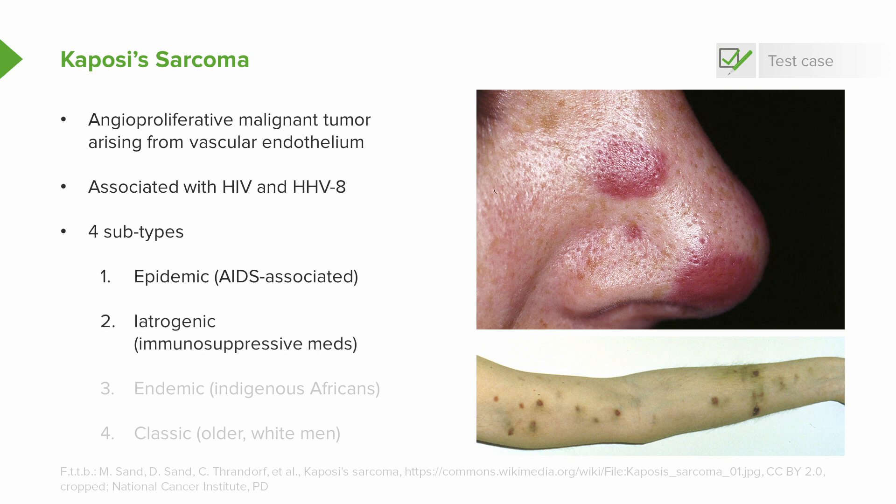But there are some other causes as well. There's the iatrogenic variety, which we still sometimes see today in patients who are on immunosuppressive medications, such as transplant patients — you'll have to keep an eye out for these lesions in those patients. There's also an endemic variety, which is endemic to indigenous Africans and is generally only seen in those areas.